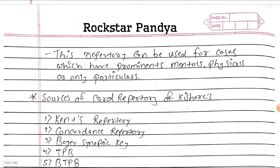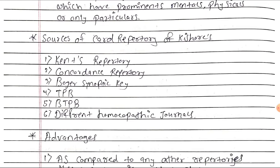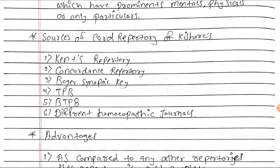This repertory can be used for cases which have generals, mentals and physicals, or only particulars. Sources of the repertory of Dr. Kishore include Kent's repertory, Concordance repertory, Boger's Synoptic Key, TPB, BTPB, and different homeopathic journals.